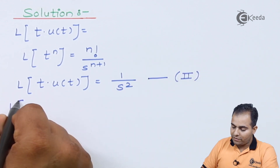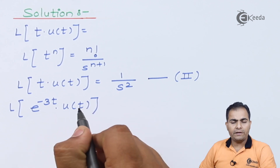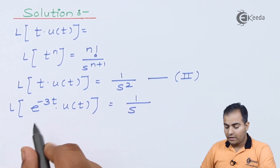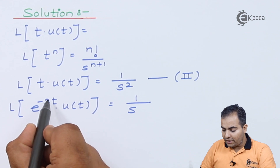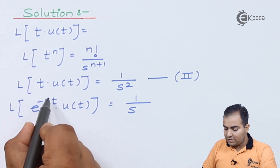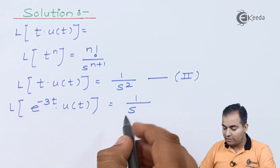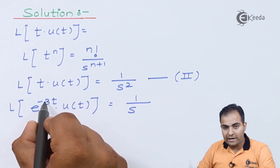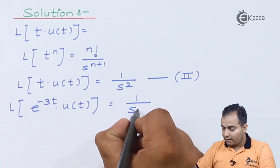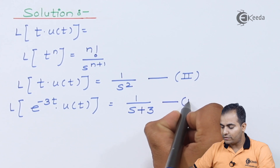Now we find the Laplace transform of e^(-3t)·u(t). Using the frequency shifting theorem, we start with L{u(t)} = 1/s. Since we are multiplying by e^(-3t), the -3 value advances the frequency, replacing s with (s+3). So L{e^(-3t)·u(t)} = 1/(s+3). This is equation number 3.